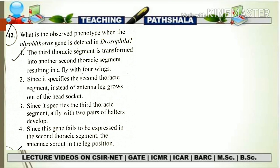The third option states: since it specifies the third thoracic segment, a fly with two pairs of halteres develops. Based on our previous discussion, there is no mutation case in which we see the development of two pairs of halteres — that means four halteres. This option is easily eliminated because there is no phenotypic effect or mutation case in which we are going to see two pairs of halteres.